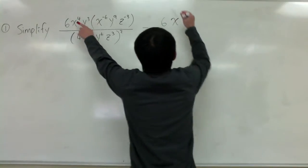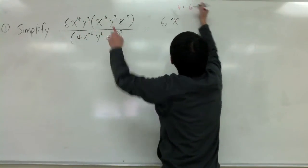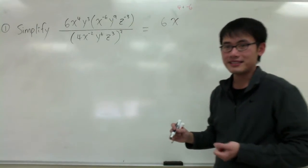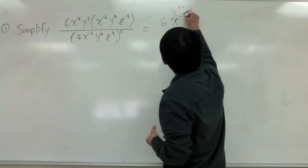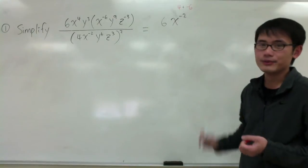And let's look at, I have the 4 and I'm going to add it with negative 6. So, 4 plus negative 6, it's like 4 minus 6. I will end up with negative 2. So, so far I have 6x to the negative 2.